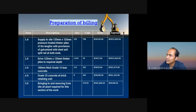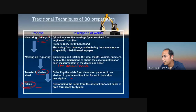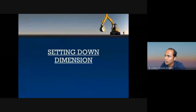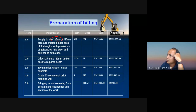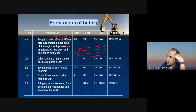This is an example of a BQ. The example shows: supply to site 125 by 125 treated timber pile of length 6 meters with provision of galvanized mild steel anti-split ring at both ends. The timber pile size is 125 x 125, 6 meters in length per piece. The quantity is 322. The rate and the unit are in numbers. This is an example of BQ.